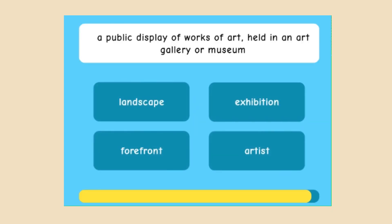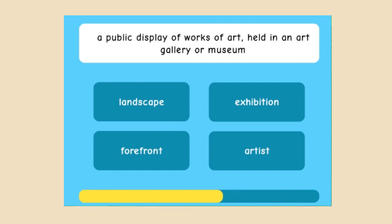Let's play a quiz on vocabulary related to art. You may learn some new words or revise the ones you already know. A public display of works of art held in an art gallery or museum — is it a landscape, an exhibition, a forefront, or an artist? It's an exhibition.